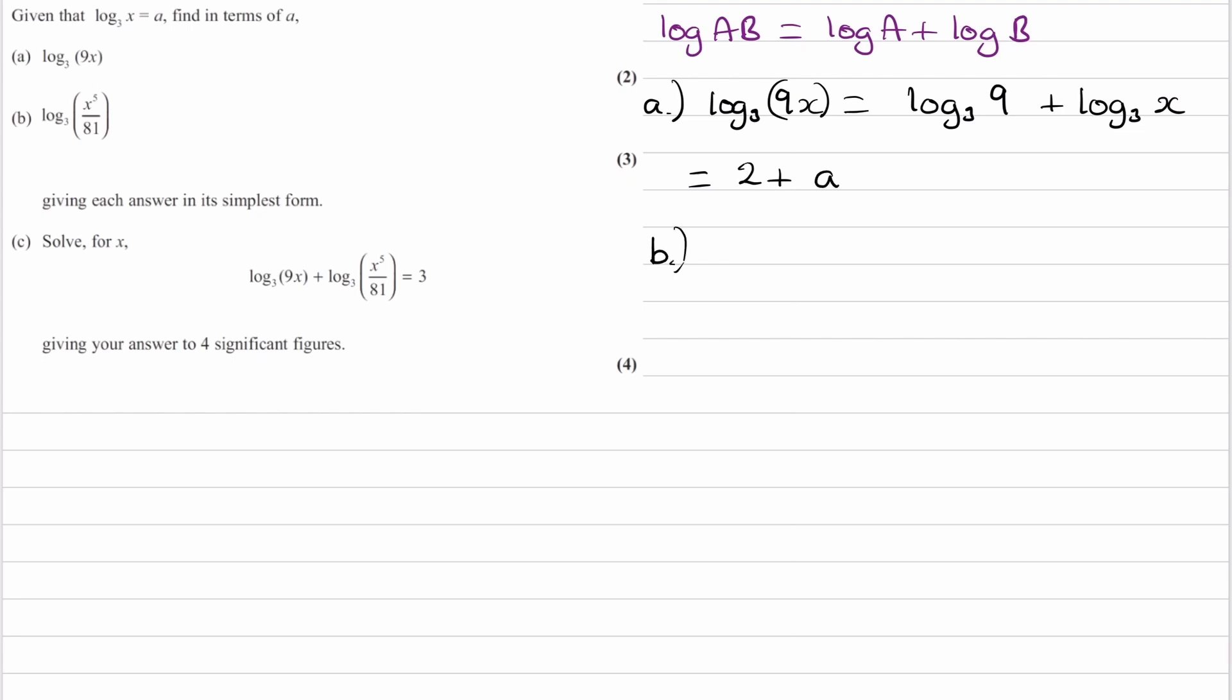And then for part B, we'd use the division rule as well as the power law. So let's write out the division rule first. If you were to have log of A over B, this is the same thing as log of A minus log of B. So then what we have on the left-hand side for part B, that turns into log of x to the power of 5 minus log to the base 3 of 81.